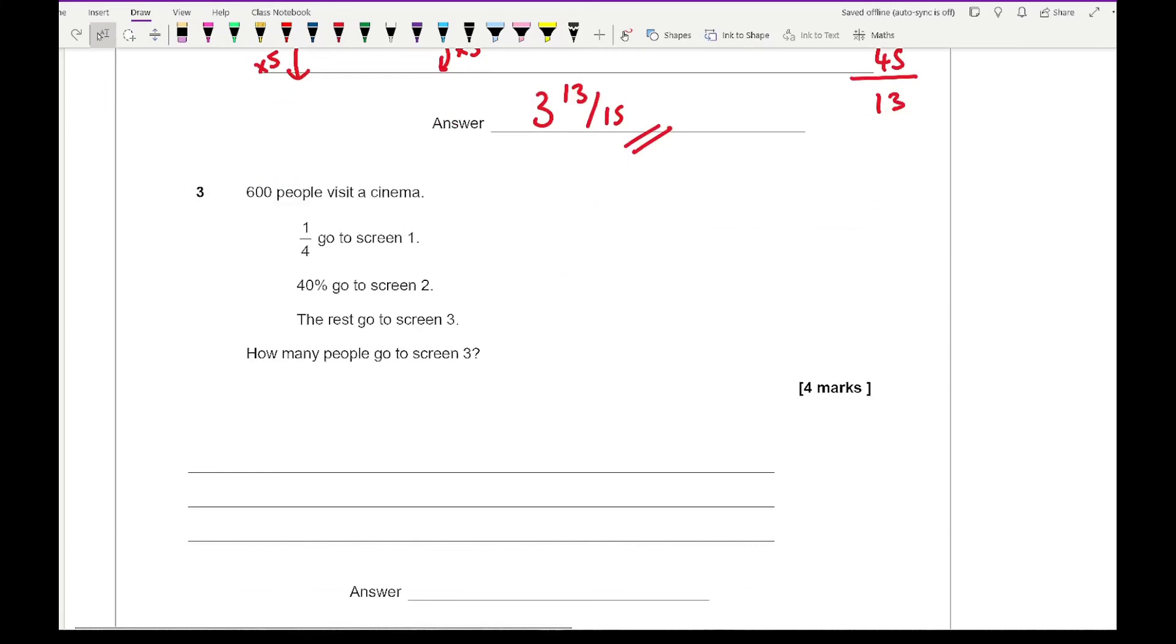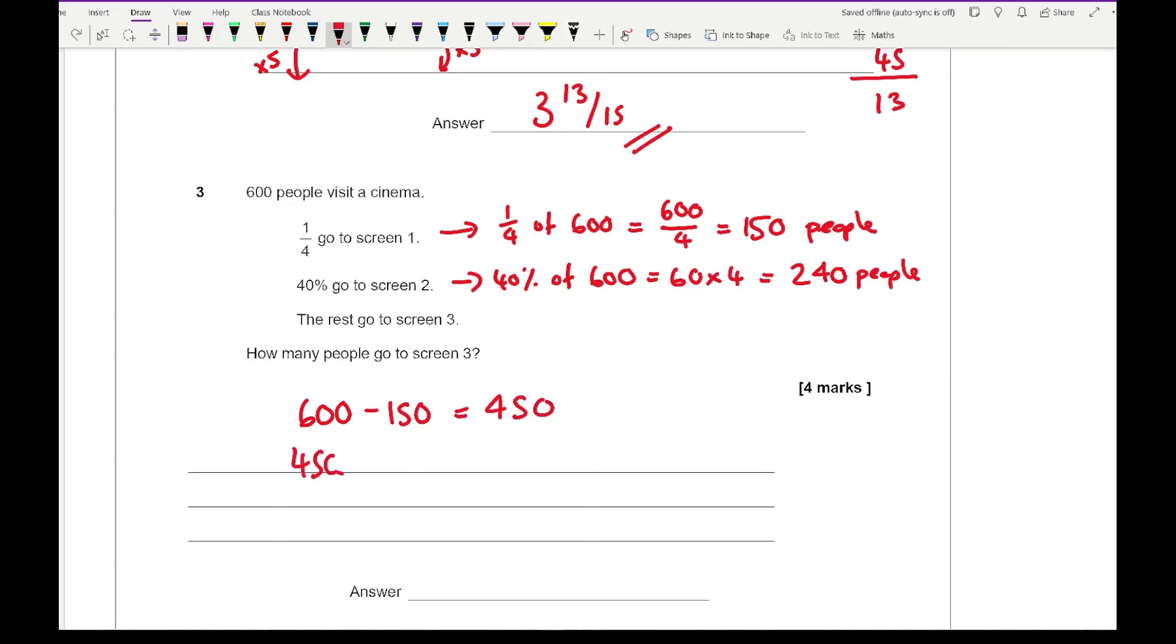For the last question, 600 people visit a cinema. One quarter go to screen one, 40% go to screen two, and the rest go to screen three. How many people go to screen three? A quarter of 600 is 600 divided by 4, which is 150 people. 40% of 600 - well, 10% is 60, so it's 60 times 4, which is 240 people. For screen three, do 600 minus 150 which is 450, then 450 minus 240, which gives 210. That's our final answer.